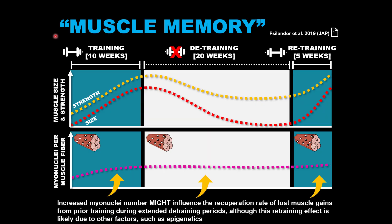We've all heard of the concept of muscle memory, but recently with the latest evidence in exercise physiology there's a new take on this concept. A number of studies have shown a retraining effect that may suggest some sort of muscle memory. Here's a study that demonstrates this: subjects engaged in resistance training for 10 weeks, experiencing a significant increase in muscle mass and strength. Then subjects stopped training or detrained for 20 weeks, during which time most of the adaptations were completely lost.